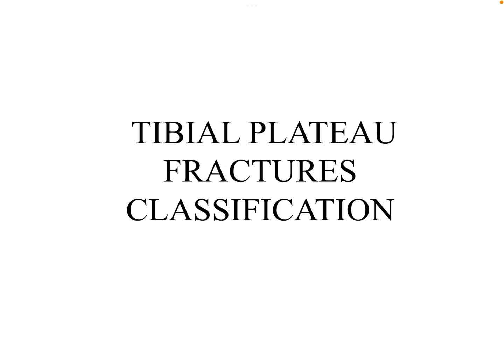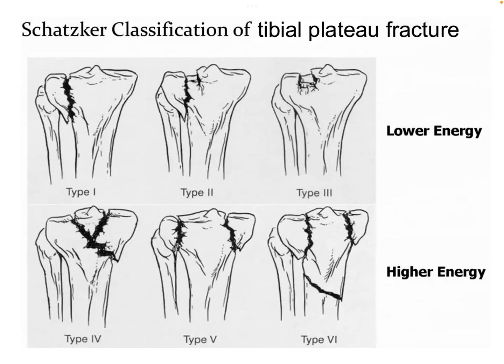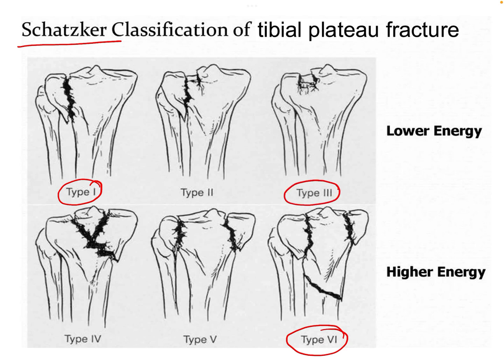In this video we will discuss the classification of tibial plateau fractures. The most famous classification is the Schatzker classification, which classifies the fracture into 6 types. The first 3 types are low energy trauma and the next 3 types are high energy trauma.